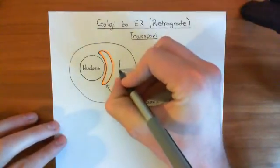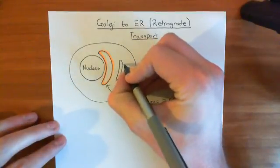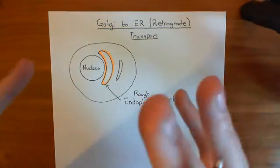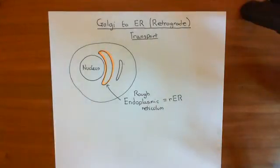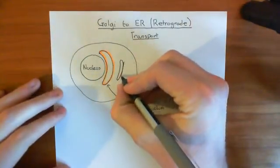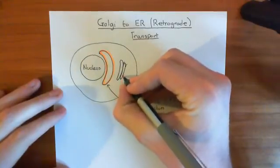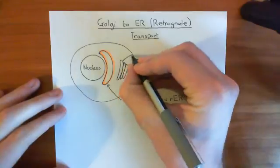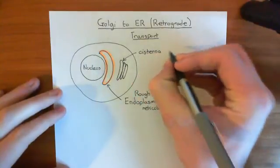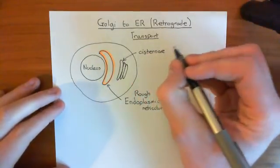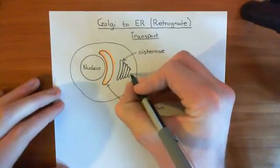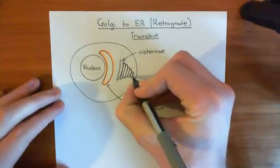Next, you have the Golgi apparatus. The Golgi is basically a stack of flattened vesicles — imagine taking a spherical vesicle, flattening it into a pancake-like structure, then stacking many of those flattened structures on top of one another. These flattened vesicle structures are known as cisternae — singular: cisterna, plural: cisternae. Generally in the Golgi apparatus you have around seven cisternae.